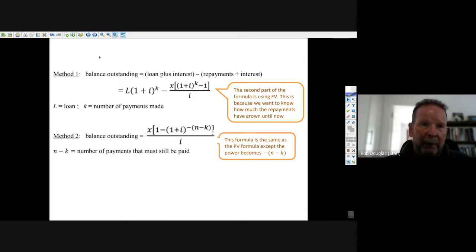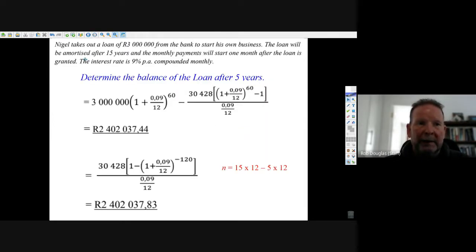Let's just take a look at an example. Here's a person that had a three million rand loan from the bank. The loan is going to mature after 15 years and the monthly payments start one month after the loan.